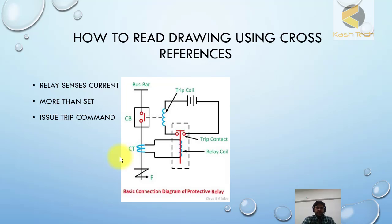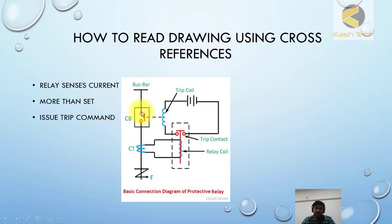For your understanding, I have drawn a very simple tripping circuit diagram. This is not what you will see in actual schematics — I will show you that later — but for understanding the concept this is a very good drawing. Here you can see the circuit breaker named CB, the trip coil, the bus bar, and through the circuit breaker it is feeding a load. This is the CT, which is a current transformer. Just understand that it reduces the current so that the relay can measure it easily.